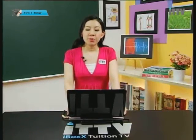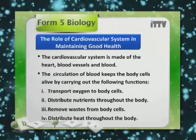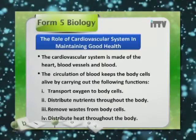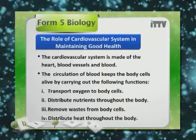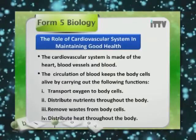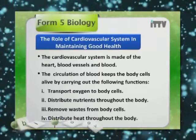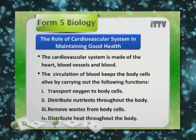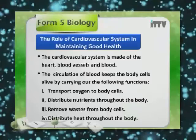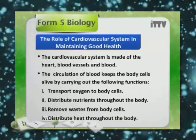What are the cardiovascular system's roles in maintaining good health? The cardiovascular system is made of the heart, blood vessels and blood. The circulation of blood keeps the body cells alive by carrying out the following functions: firstly, to transport oxygen to body cells; secondly, to distribute nutrients throughout the body; thirdly, to remove waste from the body cells; and fourthly, to distribute heat throughout the body.